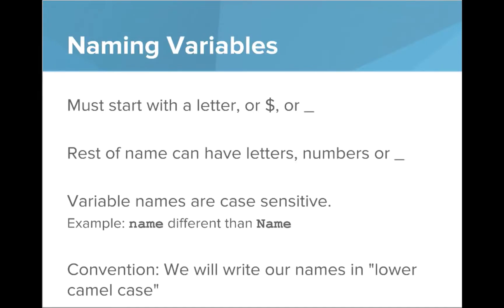When you name your variables, there's a few important rules. First, it must start with a letter or the dollar sign or underscore. The rest of the name can have letters, numbers, or the underscore. You have to remember that variable names are case sensitive: the variable name with a lowercase n is different than name with a capital M.